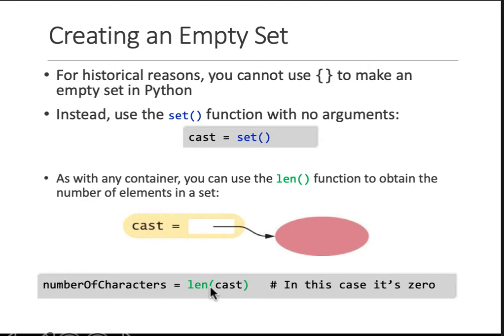Then how do you create an empty set? Set, obviously using the set command with empty parenthesis. How can you find the length of a set or the size of a set? The command is len. So in len, short for length, you give in the set name. In this case, it's zero because the set was empty.